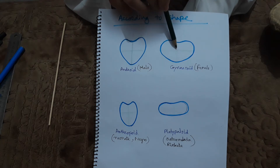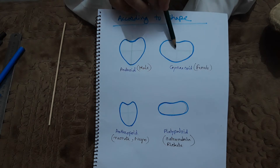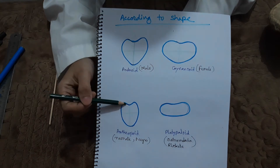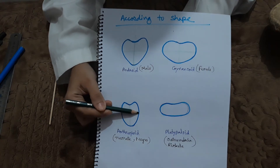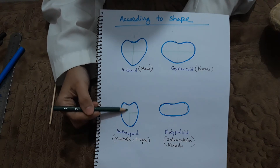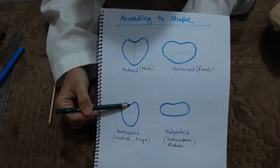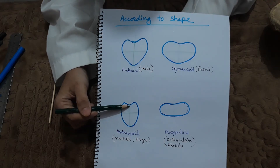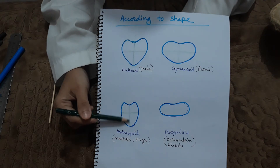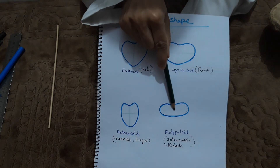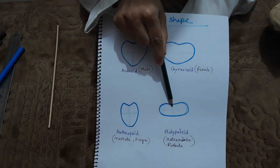The gynecoid pelvis is the wider female pelvis used during childbirth. The anthropoid pelvis has a longer anteroposterior diameter and is seen more commonly in African and Negro females. The platypelloid pelvis is a flat pelvis with a wide transverse diameter but a short anteroposterior diameter.